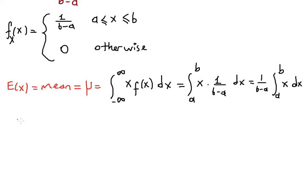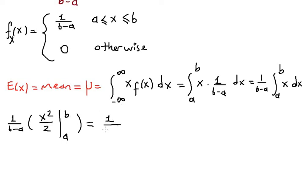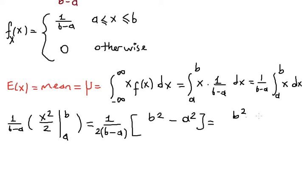The antiderivative of x is x squared over two, so we have one over b minus a times x squared over two, evaluated from a to b. Applying the fundamental theorem of calculus gives one over b minus a times one half times b squared minus a squared, which equals b squared minus a squared over two times b minus a.